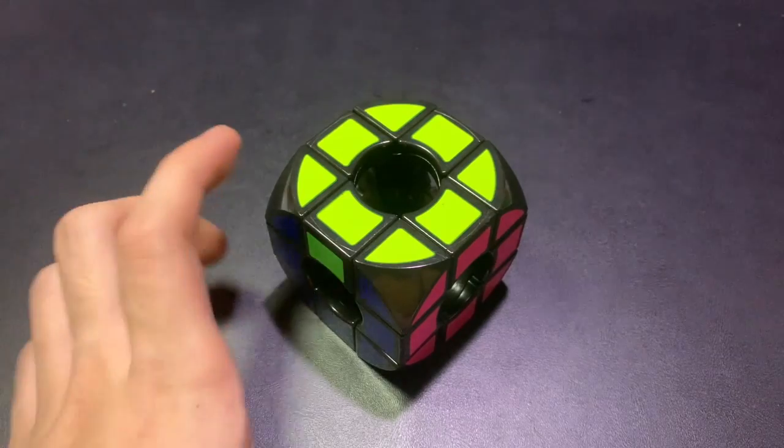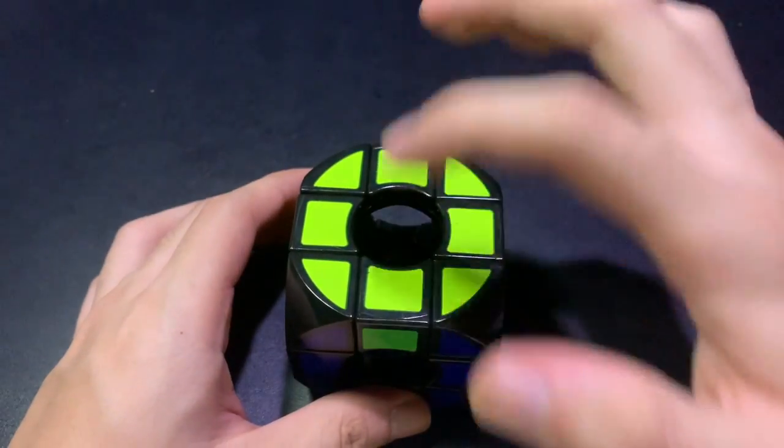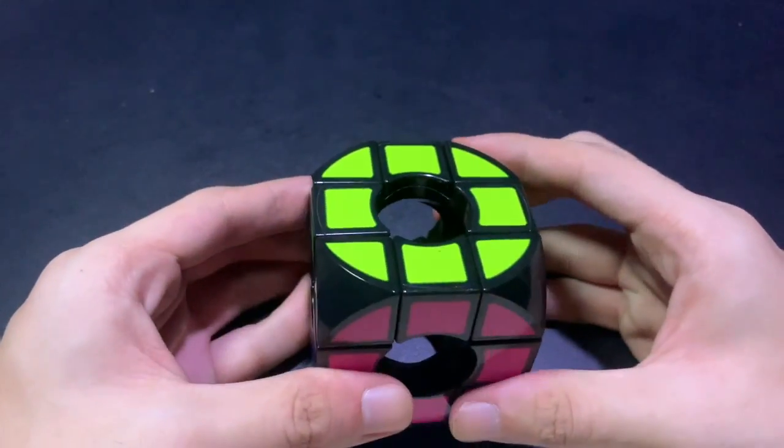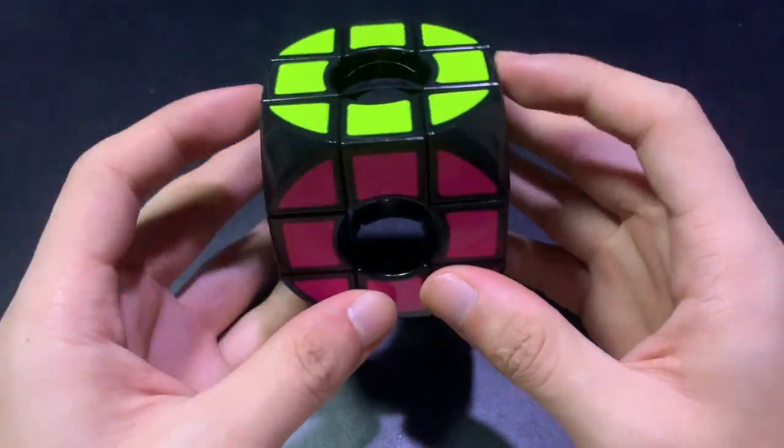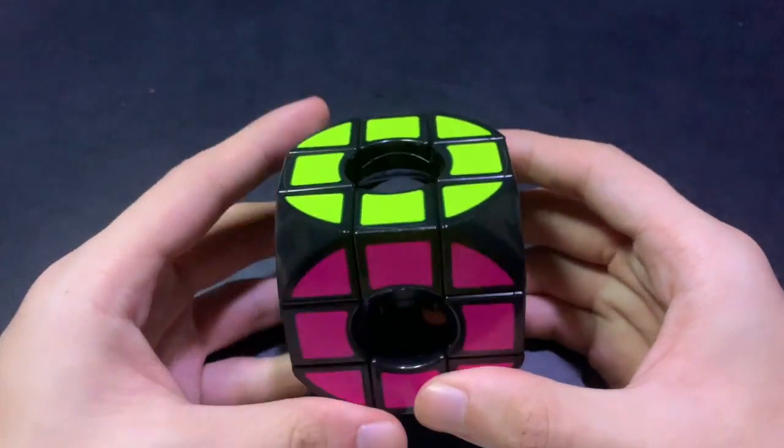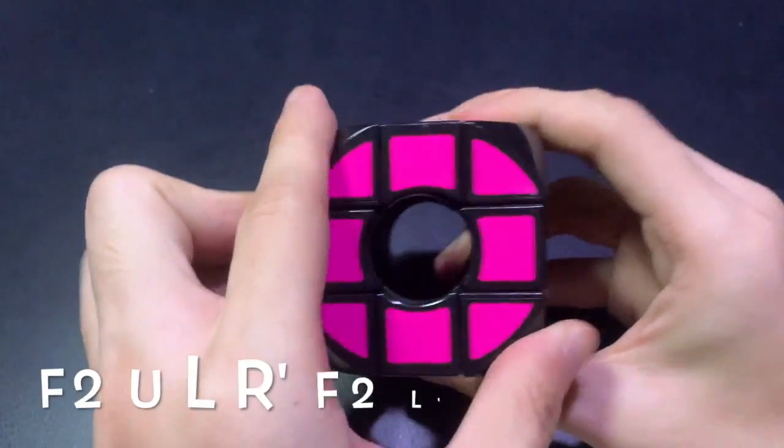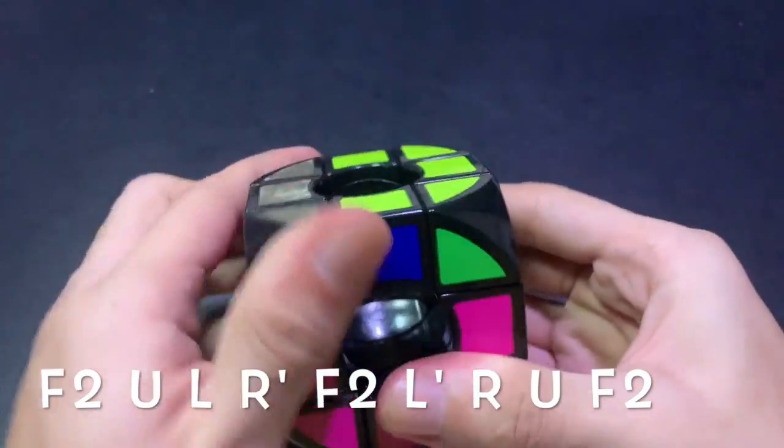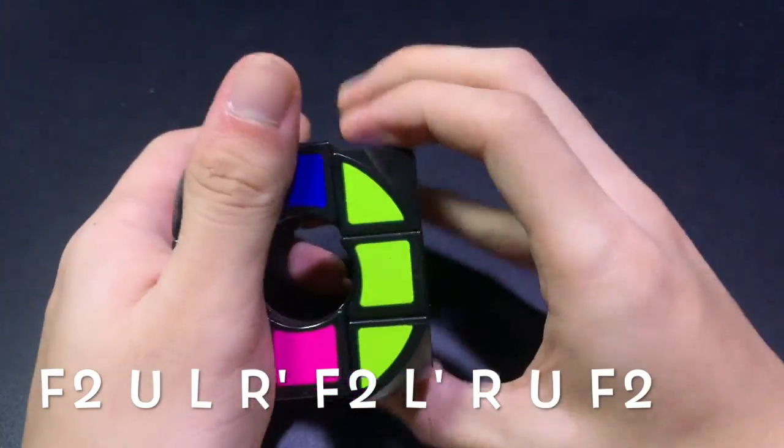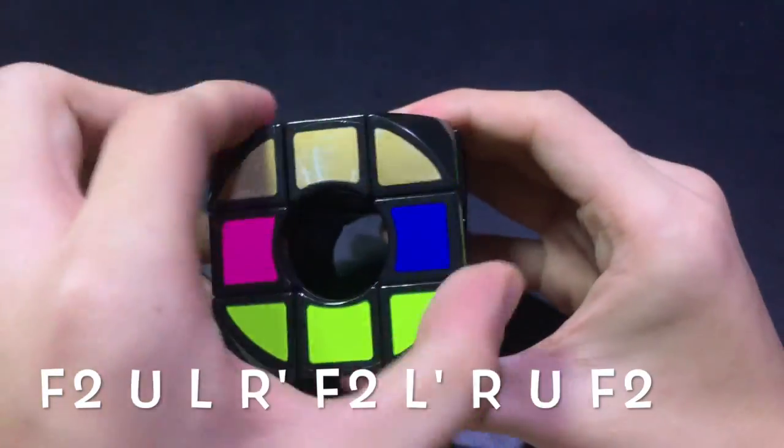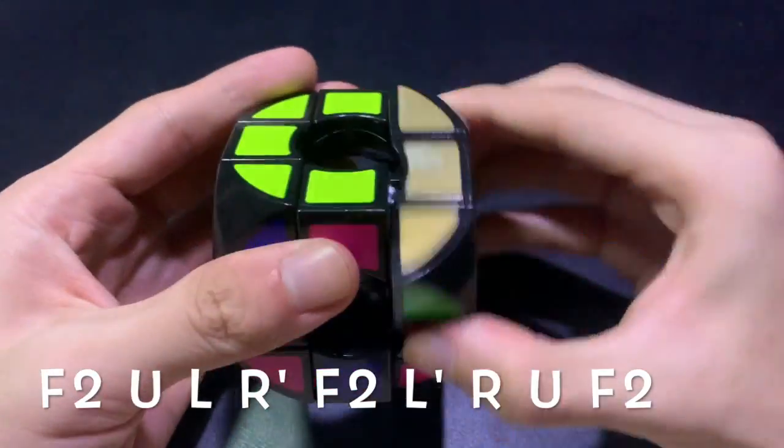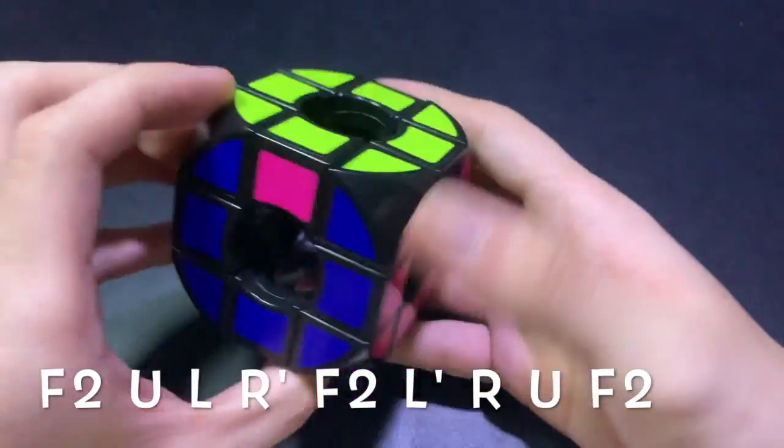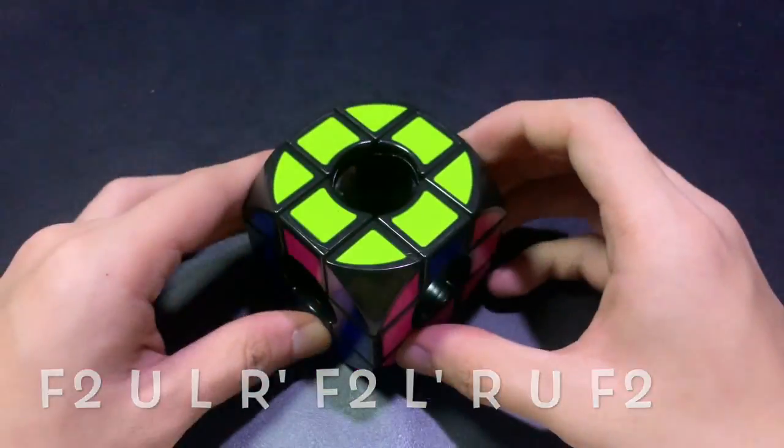The second parity is when the two opposite edges are swapped. So this green and this blue. So to fix this, you have to put both sides to the right and left and you do the following. So it's f2, u, l, r prime, f2, l prime, and r, u, and f2. So this will bring you to the adjacent state and you have to do the algorithm from there.